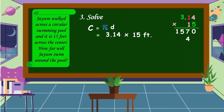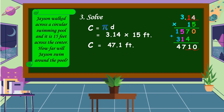1 times 4 is equal to 4. 1 times 1 is equal to 1. 1 times 3 is equal to 3. Then, let's add the partial products. Bring down 0. 7 plus 4 is equal to 11, write 1, regroup 1. 5 plus 1 is equal to 6, plus 1 is equal to 7. 1 plus 3 is equal to 4. We have two decimal numbers in our factors, so we put two decimal places in our product. The circumference is equal to 47.1 feet.